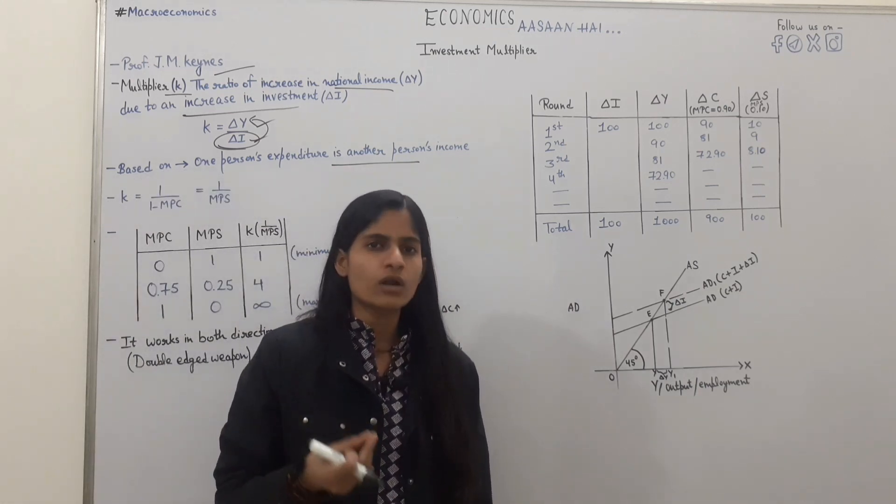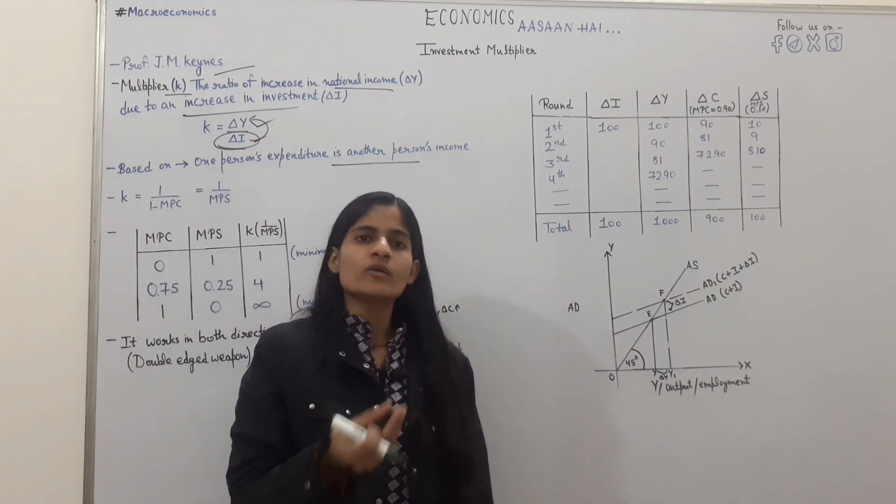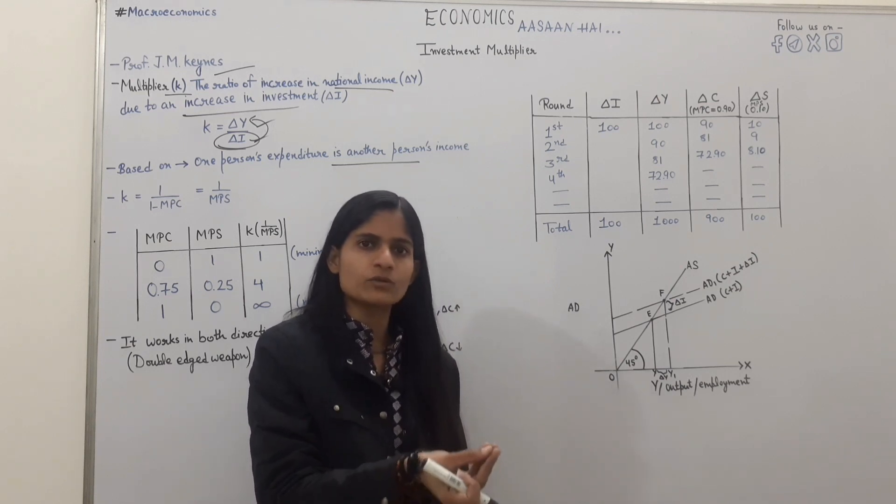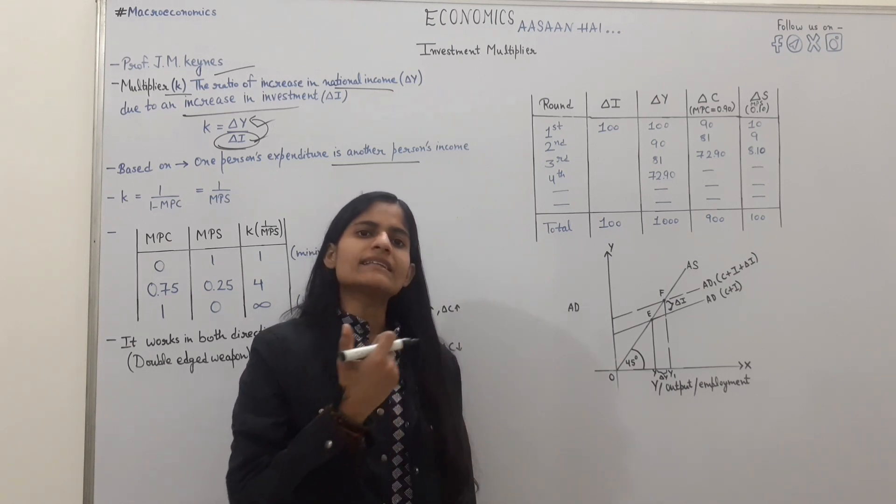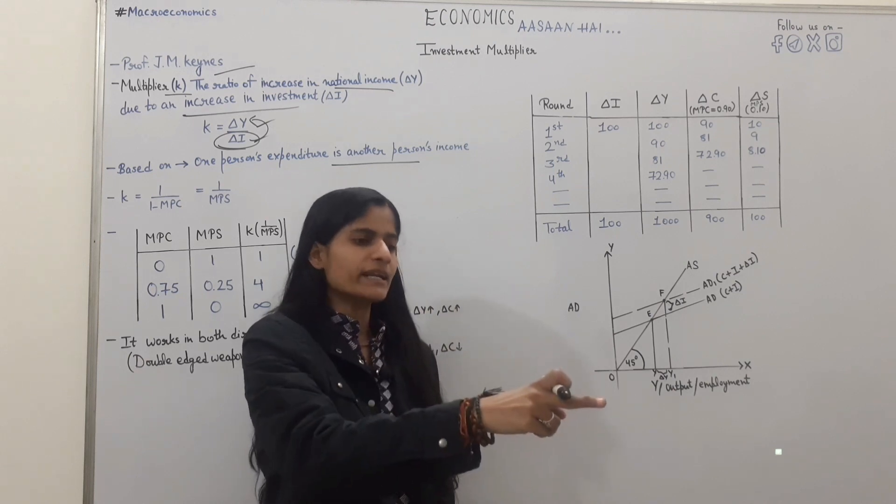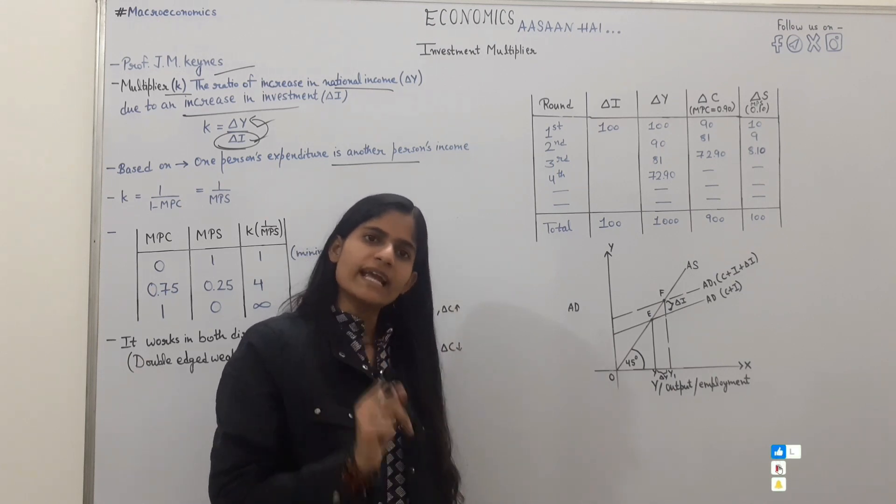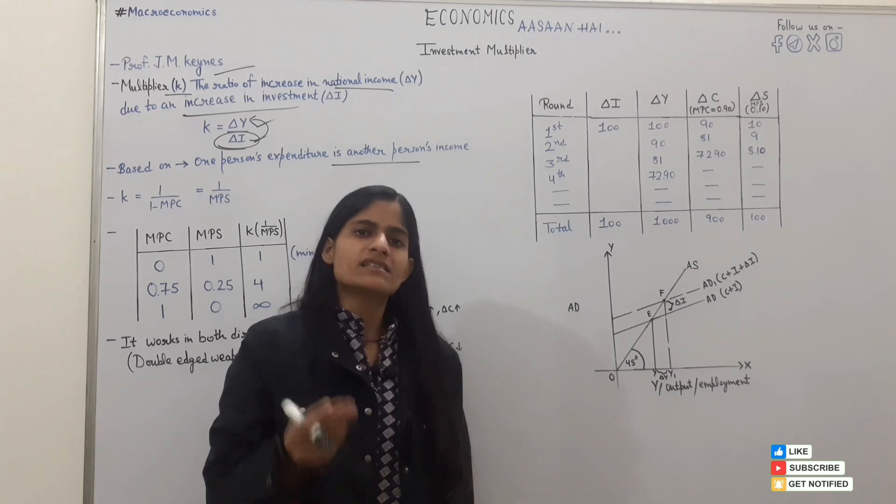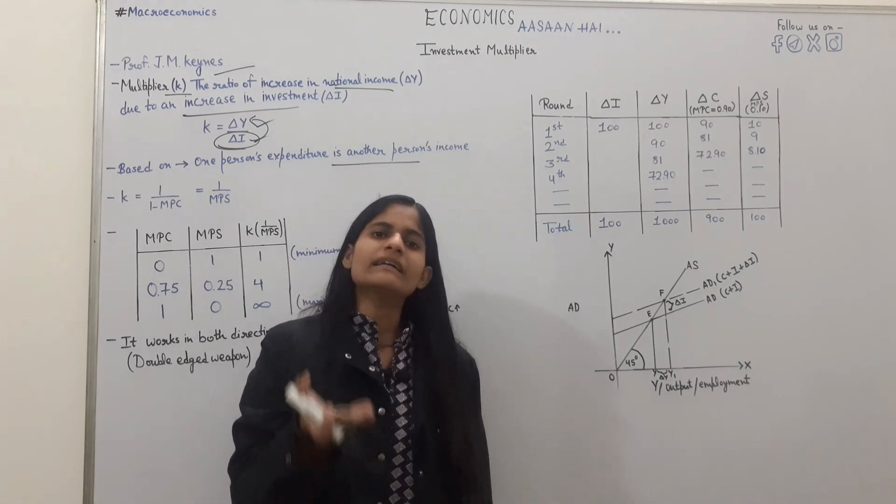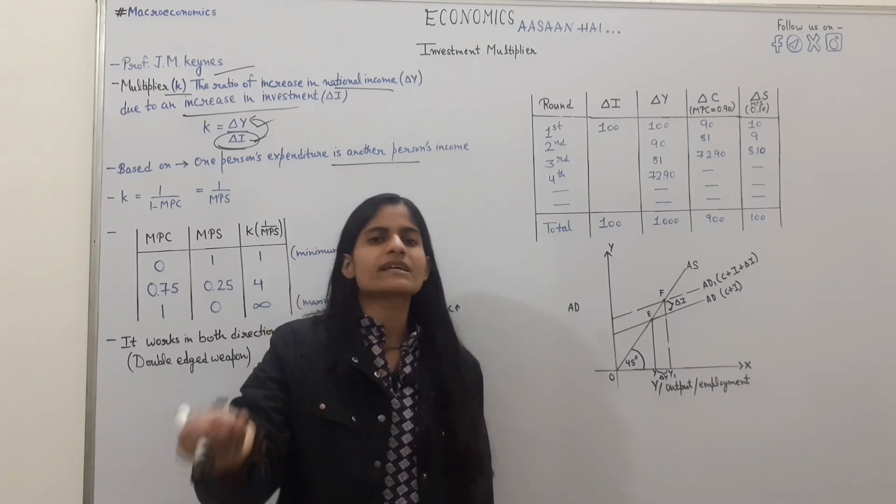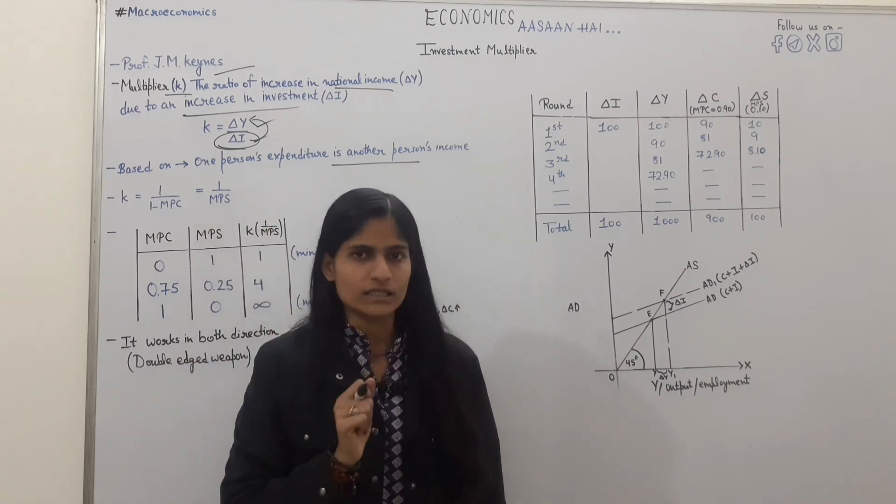For example, if I'm hungry and I have a biscuit, then I will go to the shop for 10 rupees and take a biscuit. So I have a 10 rupees expenditure here. The one person's expenditure is another person's income. When the investment increases, then the money per 10 is economic income increases.